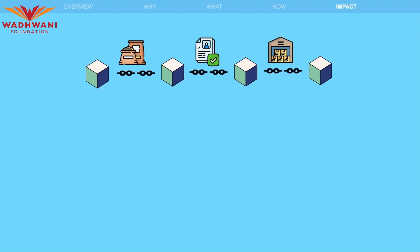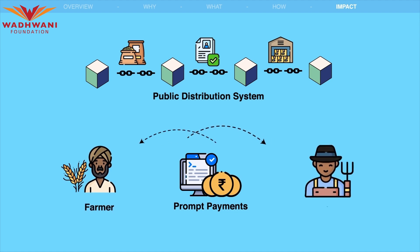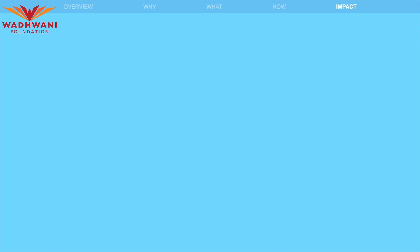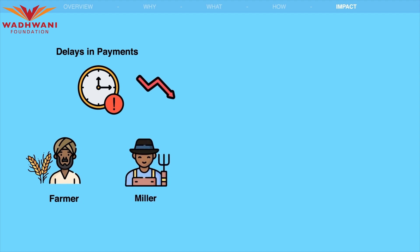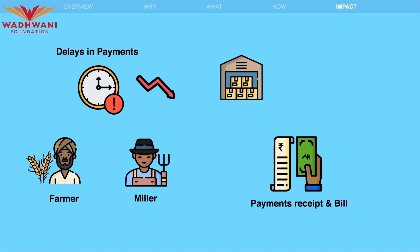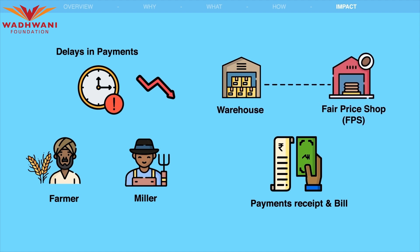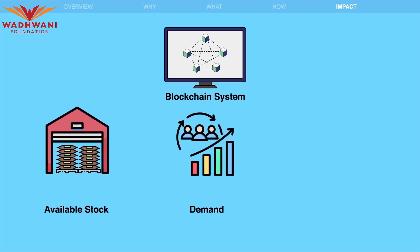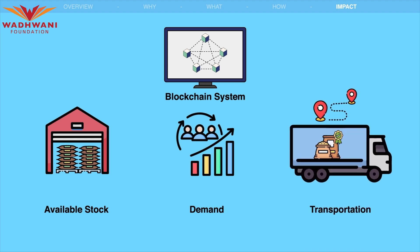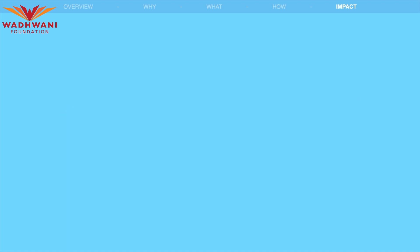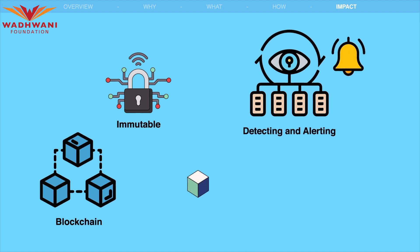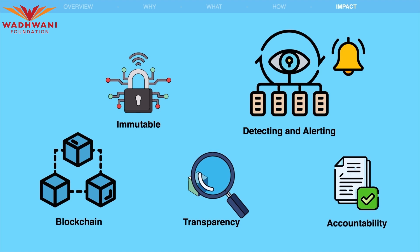The implementation of blockchain technology in the PDS system is expected to bring several benefits, including prompt payment to farmers and millers, accurate tracking of stock at different locations, and identification of pilferages. Delays in payments can be reduced as bills can be generated and payments initiated on receipt of commodities at different stages. The system would provide a holistic view of available stock and demand, enabling effective utilization of grains and transportation from surplus to deficit locations. The immutable nature of blockchain data would also help detect and alert about pilferages, leading to improved transparency and accountability.